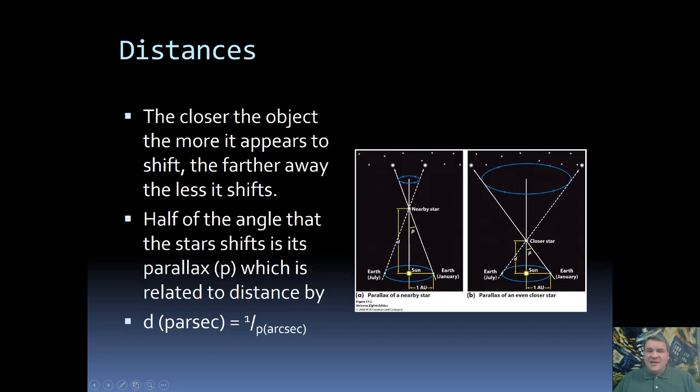So remember an arc second is 1/60th of an arc minute and an arc minute is 1/60th of a degree. So in other words an arc second is really small, it's about 1/3600th of a degree. And that also means that one parsec is going to be a very large distance.